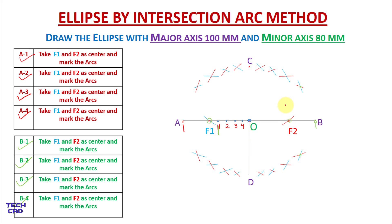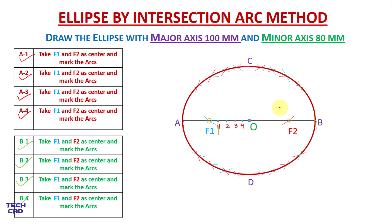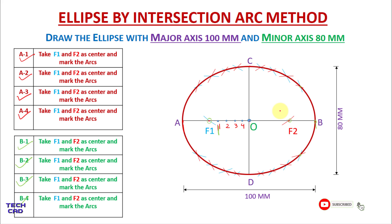In this way you have the intersections of arcs at all points. Now you can join them by freehand — you can see this is my ellipse by intersection arc method. You can give the dimensioning to the major axis and minor axis, which is 100 mm and 80 mm. This is the completion of the question. I hope you understand this intersection arc method. If you have any query, you can comment in the comment section. Thanks for watching, be happy.